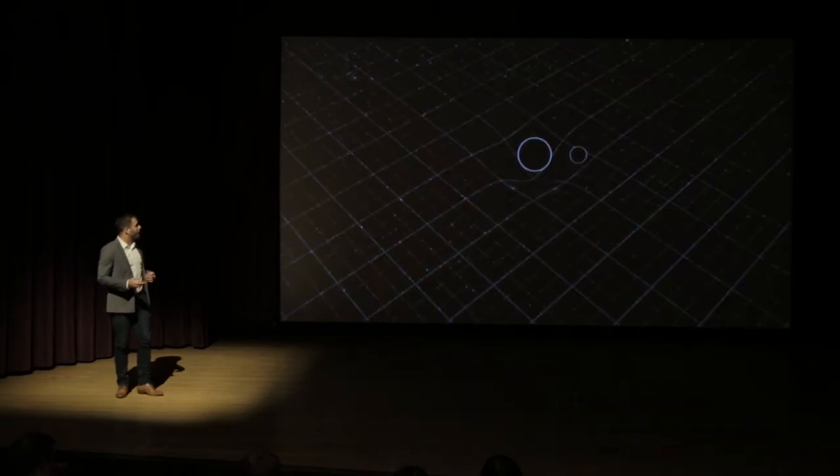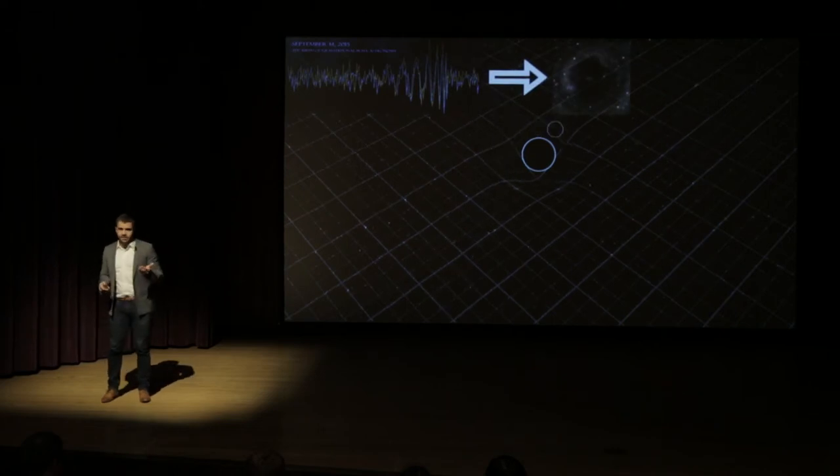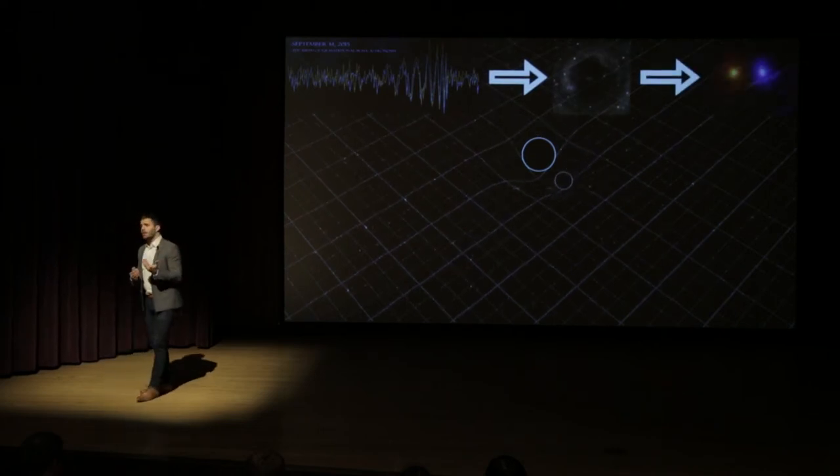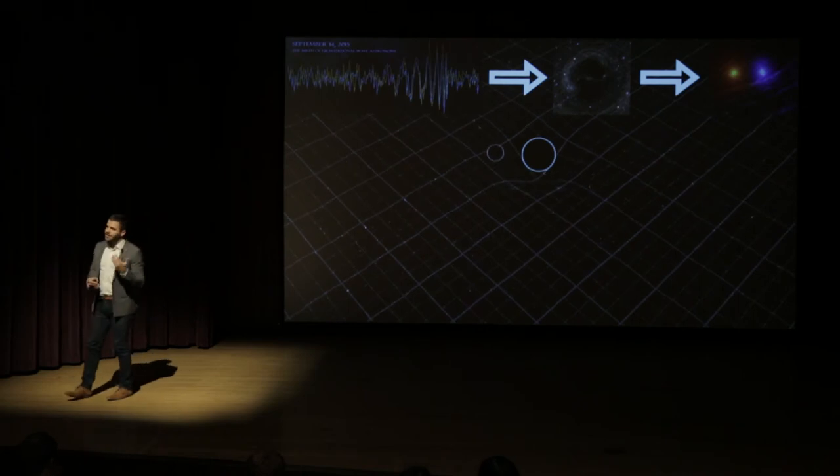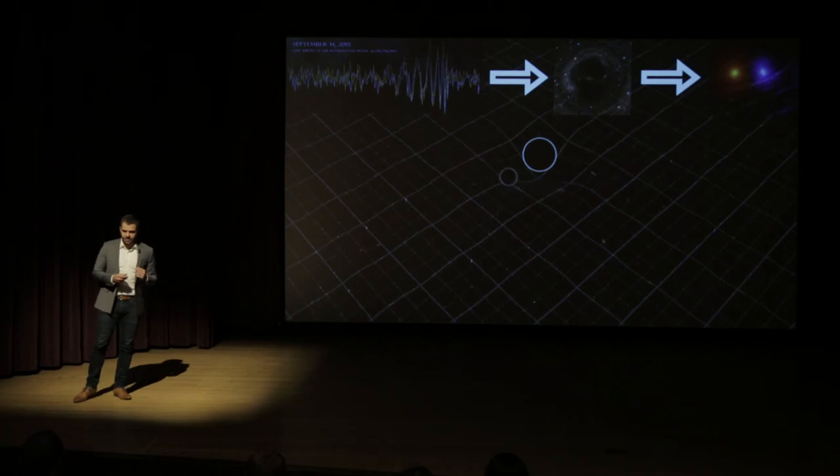So by pairing this new way of observing our universe with our simulations, we can start to infer a lot of the properties that underlie stellar evolution and the formation channels for forming these binary black hole systems.